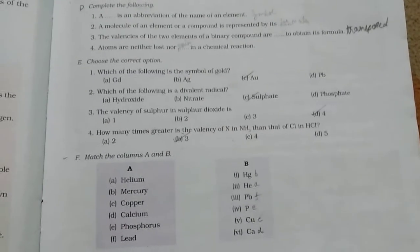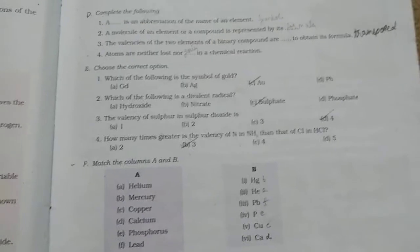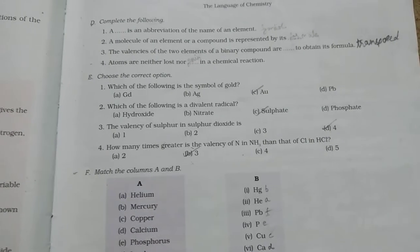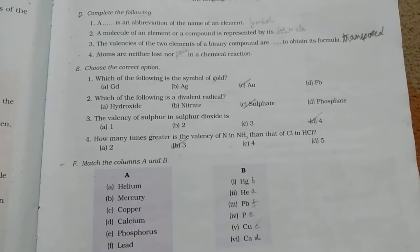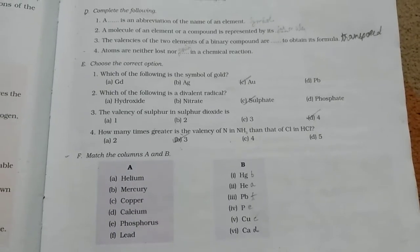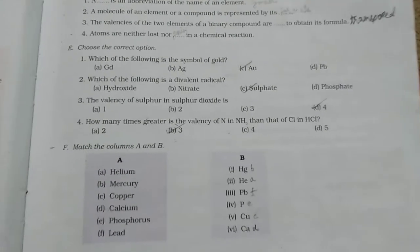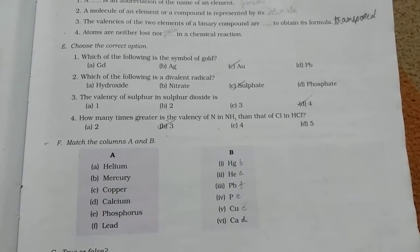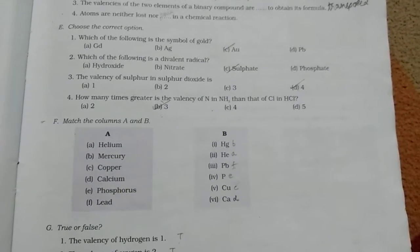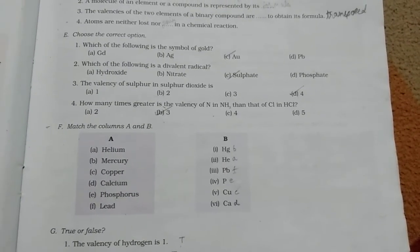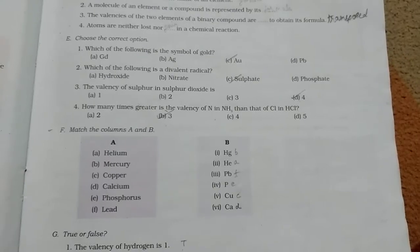Now, multiple choice question. Which of the following is the symbol of gold? So, the symbol of gold is Au. Which of the following is a divalent radical? Sulfate is a divalent radical. So, answer is option C. Third, the valency of sulfur in sulfur dioxide is 4. How many times greater is the valency of N in NH3 than that of Cl in HCl? The answer is B, 3.